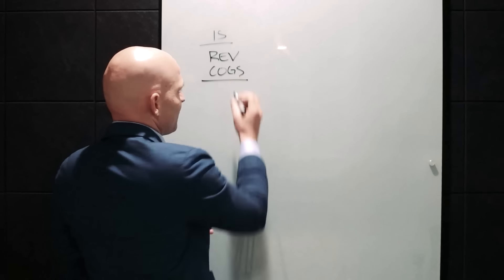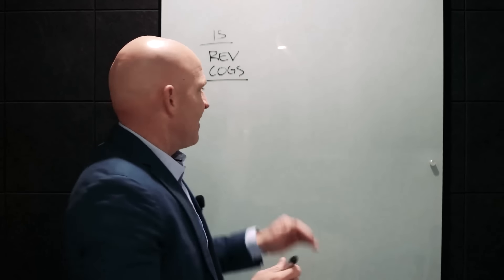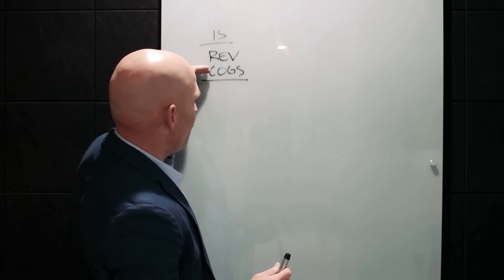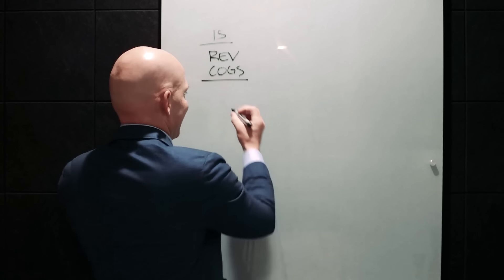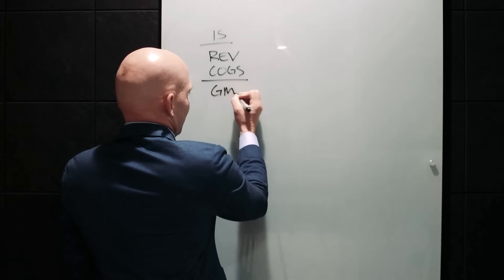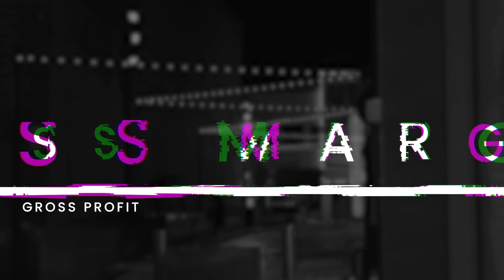That's a big mistake that a lot of companies make is they have cost of goods sold line items down below mistakenly in operating expenses. And if a company does this, then they're going to misstate the next line item, which is gross margin, also known as gross profit.